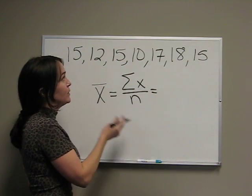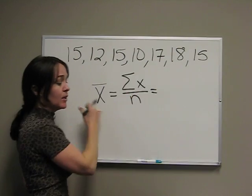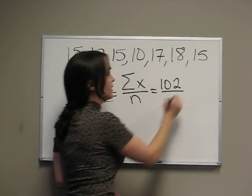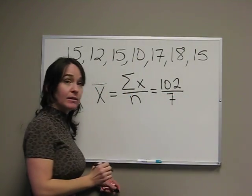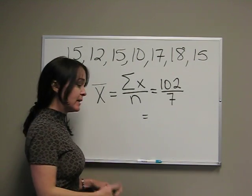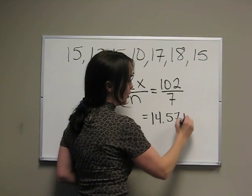Summation of x means we add all these numbers up. We get 102. There are 7 numbers, so we divide by 7.